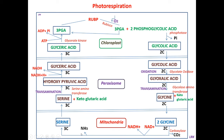The ammonia released from the two molecules of glycine — along with one molecule of carbon dioxide — is utilized in various transamination reactions. This serine enters back into the peroxisome, where it undergoes transamination in the presence of alpha-ketoglutaric acid, and hydroxypyruvic acid is formed. This hydroxypyruvic acid, a three carbon compound, undergoes reduction using one NADH, converting itself into glyceric acid. Glyceric acid then enters back into the chloroplast.